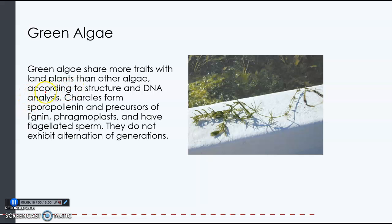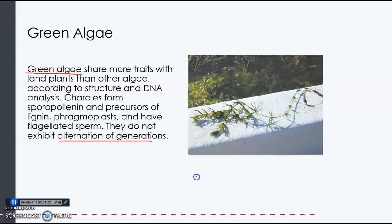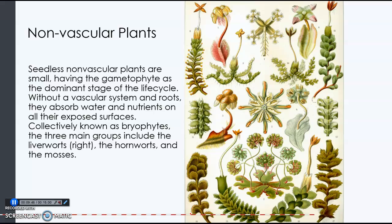Green algae share more traits with land plants than other algae. This green alga is called Chara, or charophytes. It is not in the kingdom Plantae because it does not exhibit alternation of generations. To be considered a plant, an organism must exhibit alternation of generations.